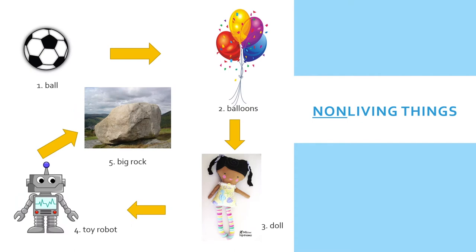Now let's take a look at some non-living things. I see a soccer ball, balloons, a doll, a toy robot, and a large rock. Some of these are man-made items and some are found in nature, but they are all non-living things.